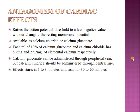To antagonize cardiac effects of hyperkalemia, you raise the action potential threshold to a less negative value without changing the resting membrane potential, creating a larger gap between resting membrane potential and threshold. This is achieved by giving calcium chloride or calcium gluconate. Calcium chloride should be given through a central line, as peripheral extravasation causes necrosis. Calcium gluconate can be given peripherally. Effect starts in 1 to 3 minutes and lasts 30 to 60 minutes. Use when EKG changes from hyperkalemia are present, typically at potassium >6 or 6.5 mEq/L.